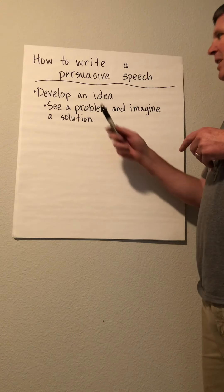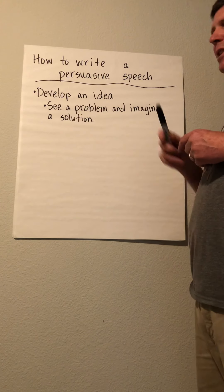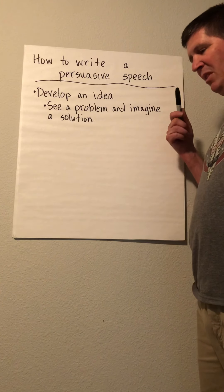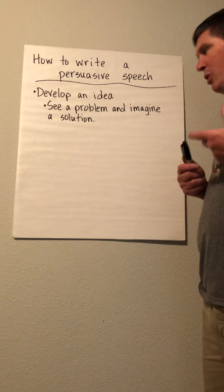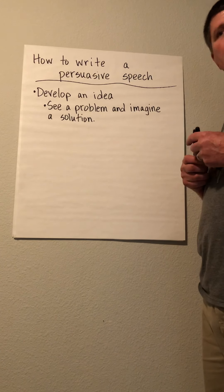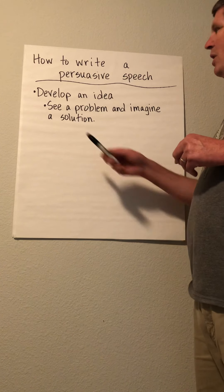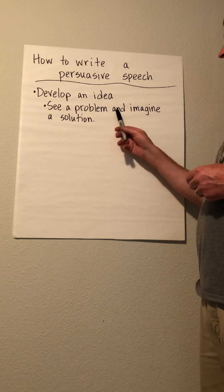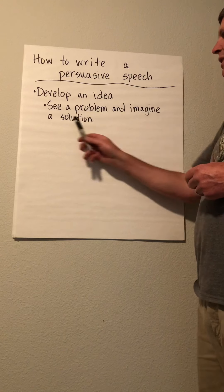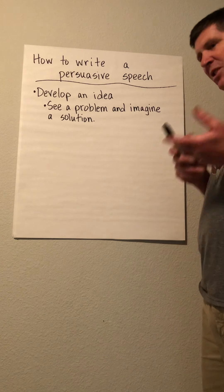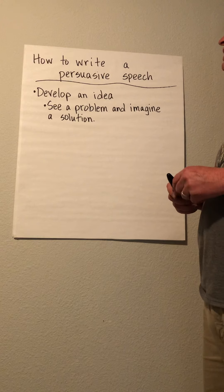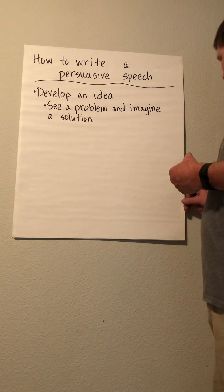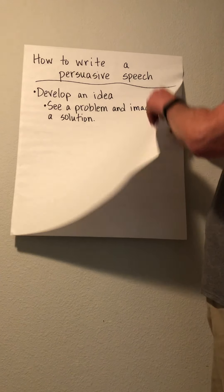When we did our first lesson, we talked about developing an idea. That was the lesson where we all wrote a very similar speech to Ms. Quinn about getting more Chromebooks. Today, we're going to focus on the idea of seeing a problem and imagining a solution. The first step to doing this is to think about problems — things that need to change, things that need to be fixed.